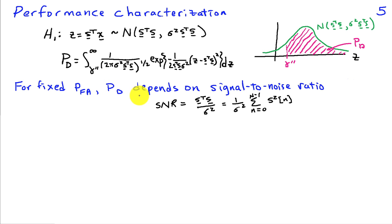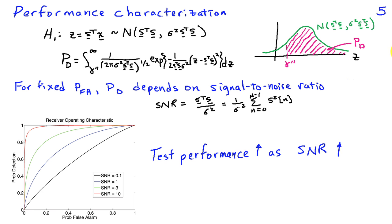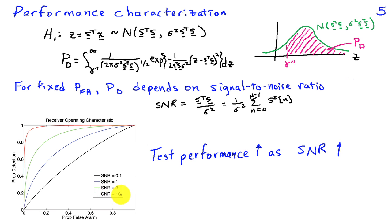Once the probability of false alarm is fixed, that gives a particular threshold gamma double prime. The probability of detection depends only on the signal-to-noise ratio — the energy in the signal divided by the variance of the noise — which is the sum of the squares of the signal normalized by the noise variance. The receiver operating characteristic for different SNR values shows that when SNR is very small (e.g., 0.1), performance lies close to the chance line. As SNR increases, performance improves, and at SNR of 10 we get fairly high probability of detection with reasonably small probability of false alarm.